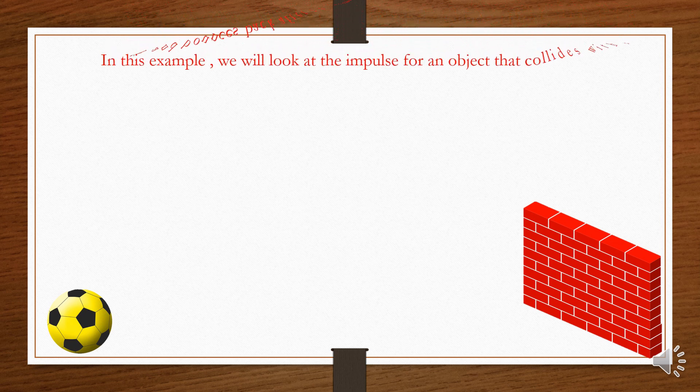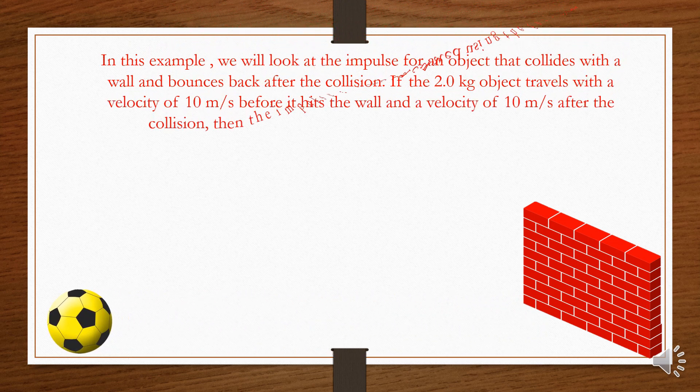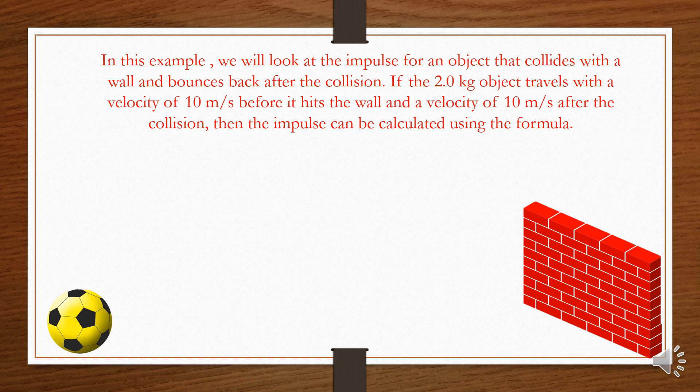In this example, we will look at the impulse for an object that collides with a wall and bounces back after the collision. If the 2.0 kilogram object travels with a velocity of 10 meters per second before it hits the wall and a velocity of 10 meters per second after the collision,